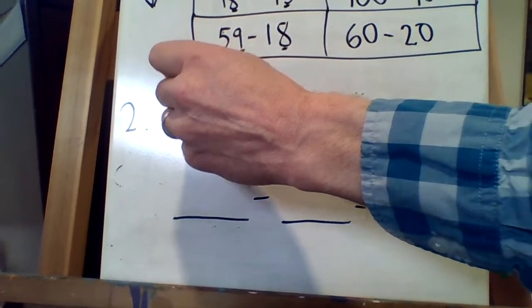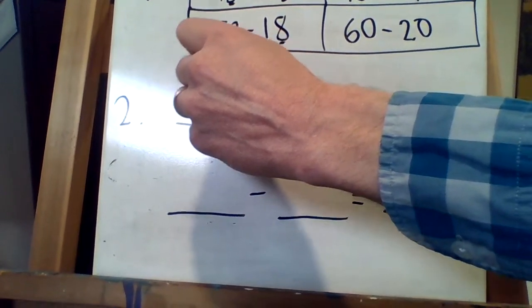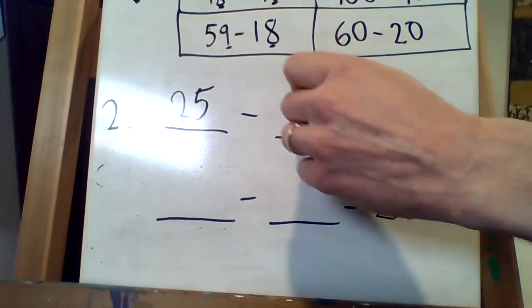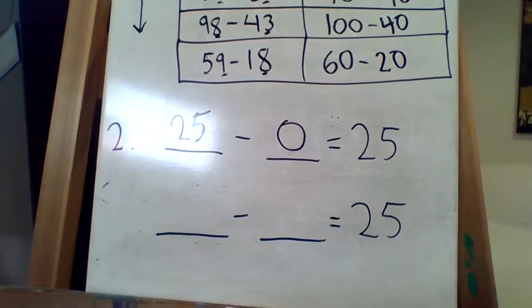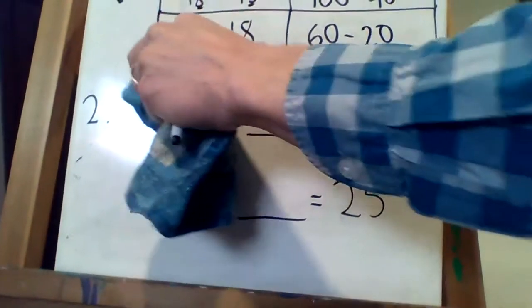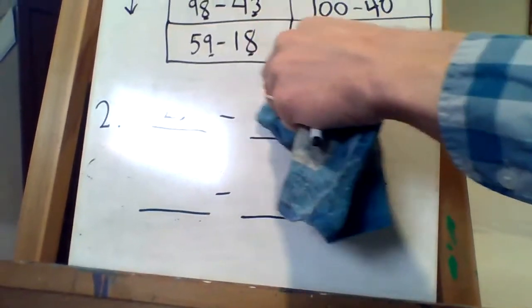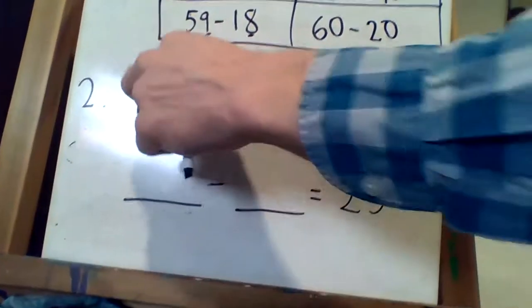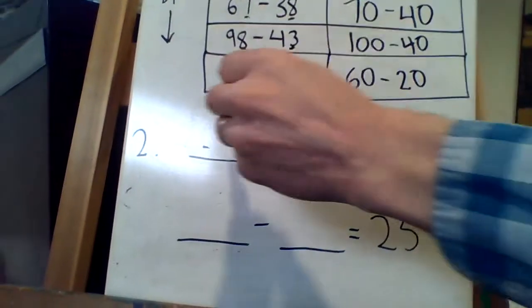So let's start with the easiest ones. 25 subtract 0. I don't even know if that's an estimate though. That's almost too easy. Let's take that one away. Let's not even use that one. We are estimating, so we should have a 0 at the end. How about a little harder.